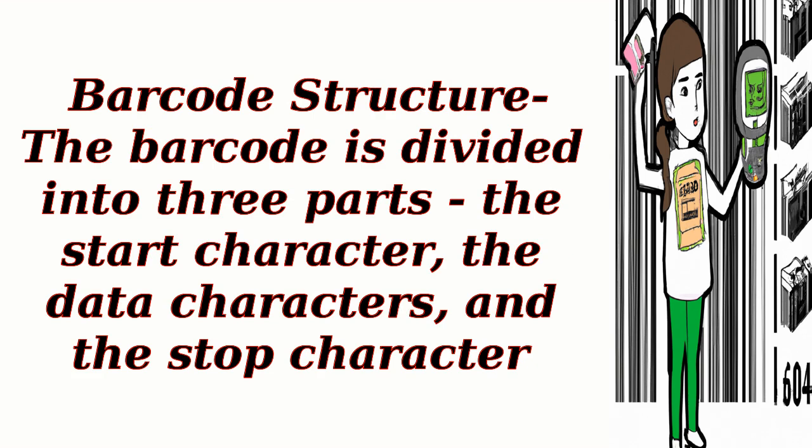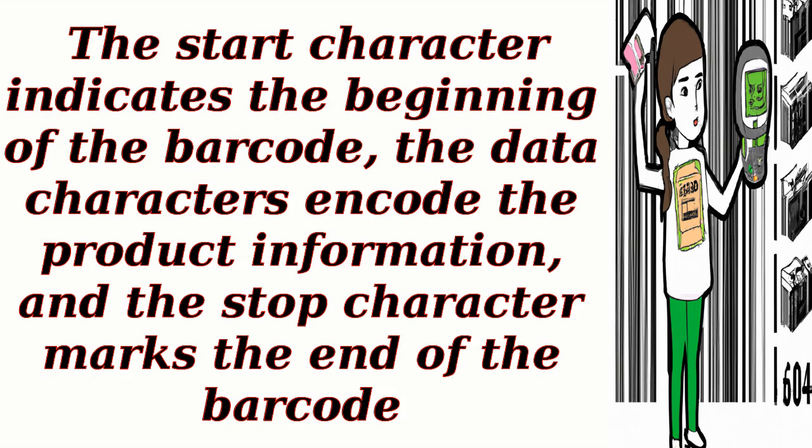Barcode structure: the barcode is divided into three parts — the start character, the data characters, and the stop character. The start character indicates the beginning of the barcode, the data characters encode the product information, and the stop character marks the end of the barcode.